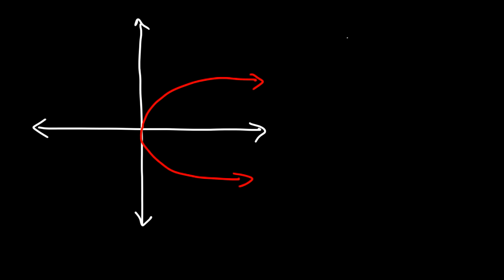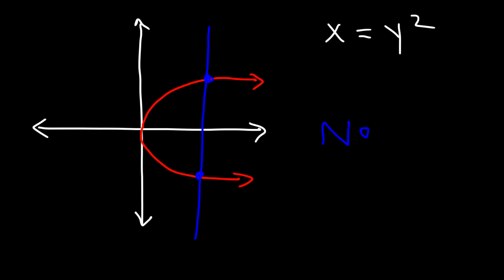This graph is associated with the equation x equals y squared. Is it a function? If we draw a vertical line, notice that it touches the line at more than one point — it touches at two points. Therefore this is not a function; it doesn't pass the vertical line test.